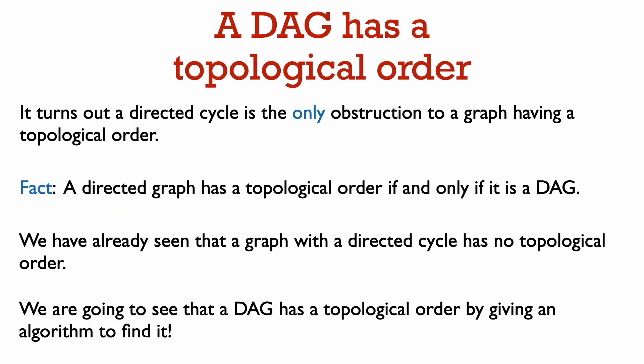Okay, let's go back to talking about topological order. It turns out that having a directed cycle is the only obstruction that prevents a graph from having a topological order. A directed graph has a topological order if and only if it is a DAG. We have already seen that a graph with a directed cycle cannot have a topological order, so I need to tell you why a DAG always has a topological order.